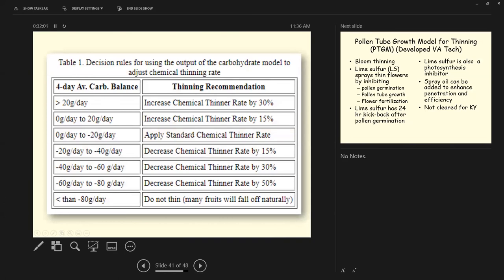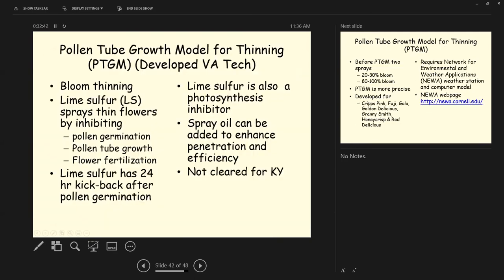So this is a four day average carbohydrate balance. So if you had a lot of sunny weather, things are sticking on the tree and it's looking good. It comes out with a 20 gram day. You increase your chemical thinner rate by about 30% from what you normally would use. Here we have a 20 gram day to minus 40 gram day where you're losing carbohydrate, maybe a little cloudy weather, maybe not a whole lot of sunshine. You decrease your chemical thinning rate by 15%. Here we have really bad weather, less than a minus 80 gram day. You don't thin. Many fruits are going to fall off naturally.